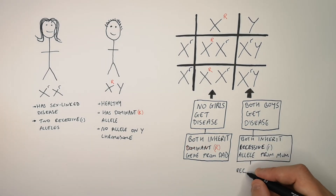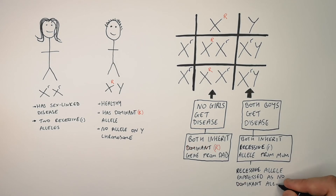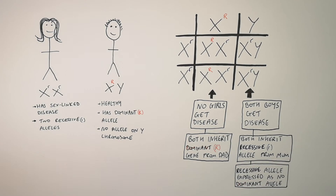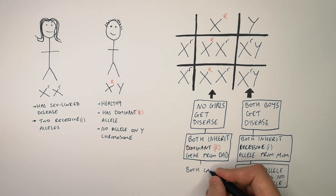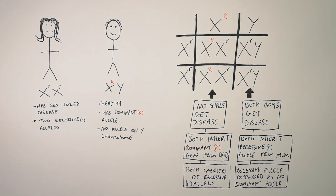Both boys will get the disease because both inherit the recessive small r allele from mum. The recessive allele is expressed as there is no dominant allele to prevent it. Both girls are carriers of the recessive allele, but their dominant allele prevents expression of the recessive allele, so they do not have the disease.